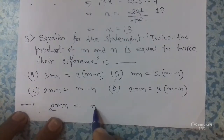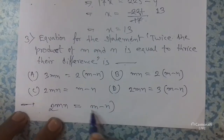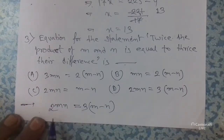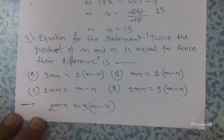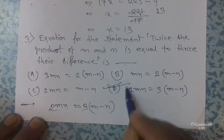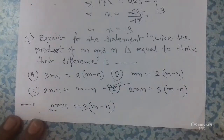Their difference is m minus n. Thrice means multiply by 3. So the equation is 2mn = 3(m − n). Option D is the correct answer.